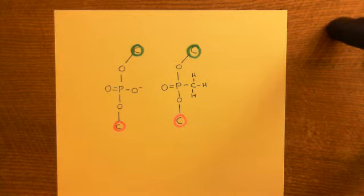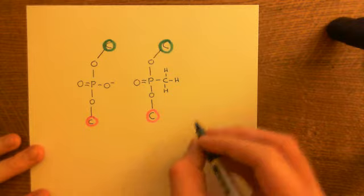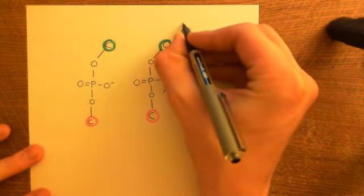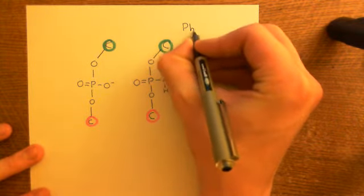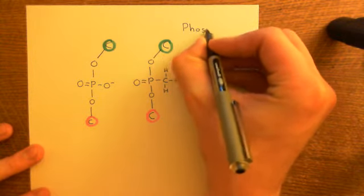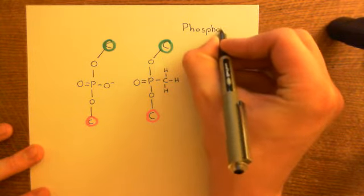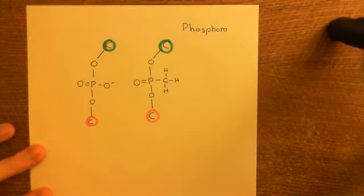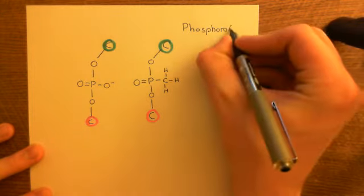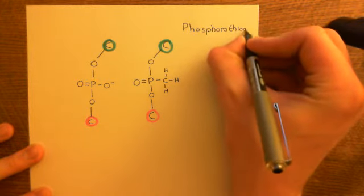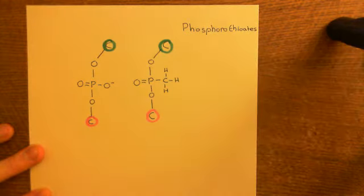So it wasn't that effective at stopping gene expression. The next form of oligonucleotide we're going to turn our attention to is what's known as the phosphorothioate anti-sense oligonucleotides. So, what is the structure of a phosphorothioate anti-sense oligonucleotide?